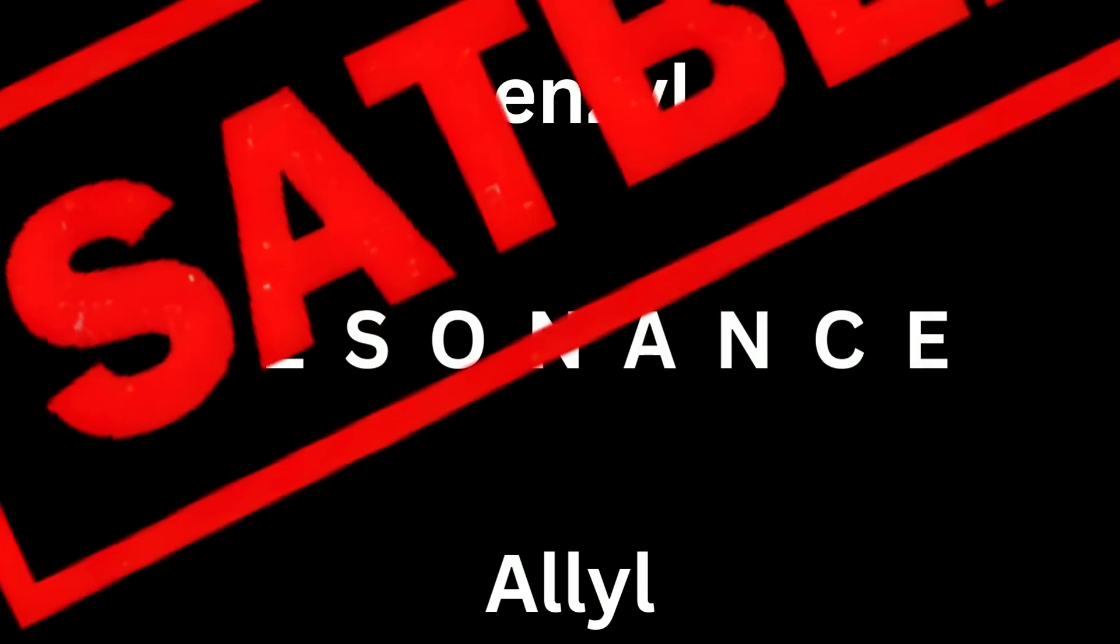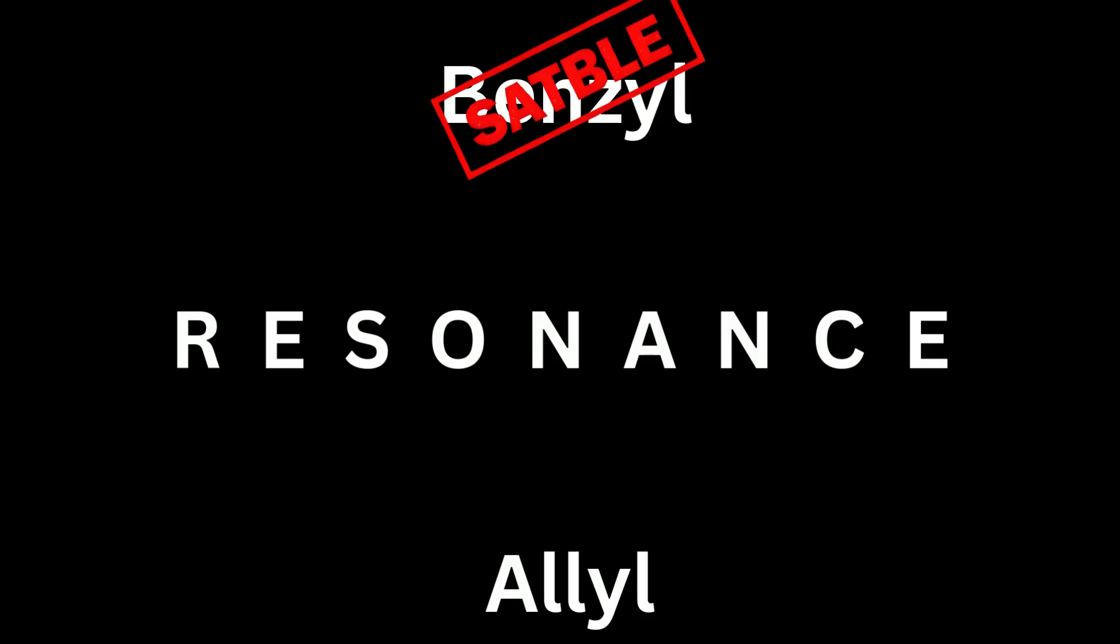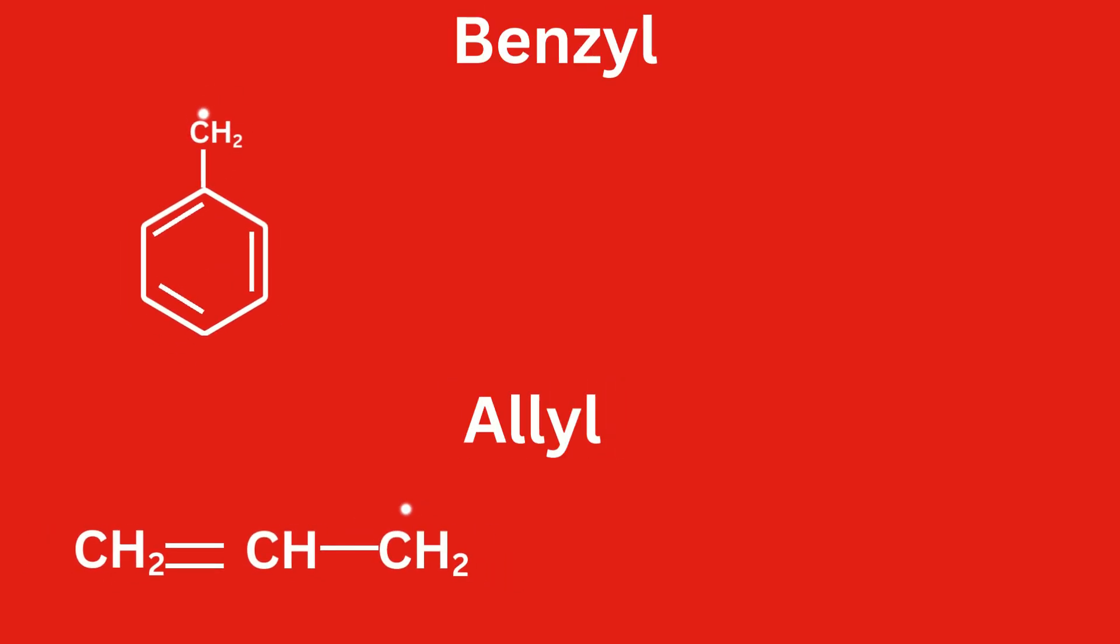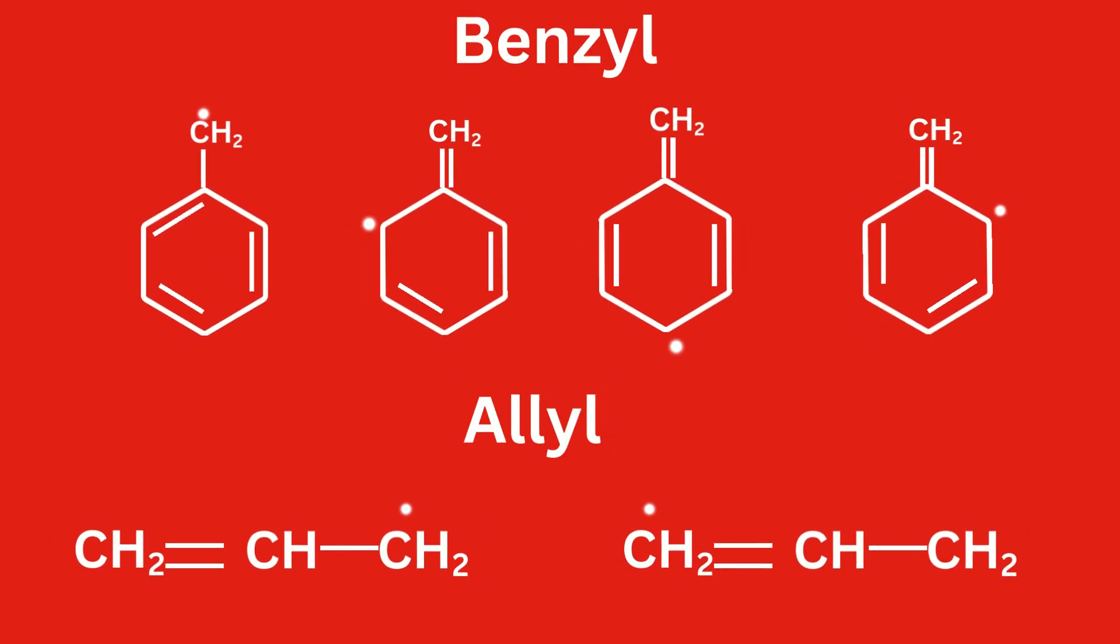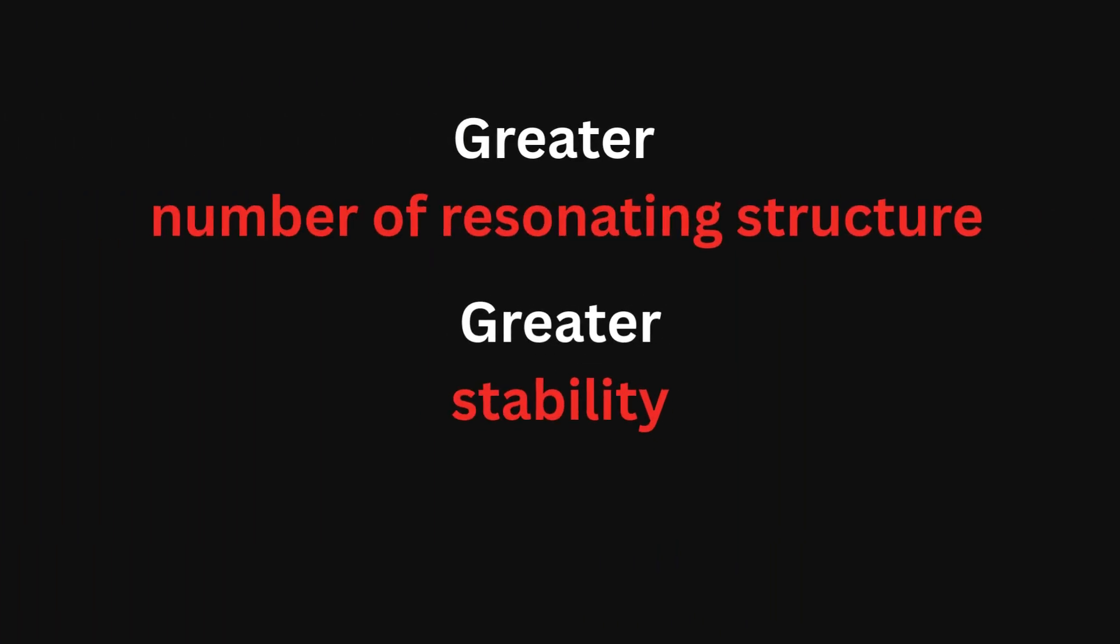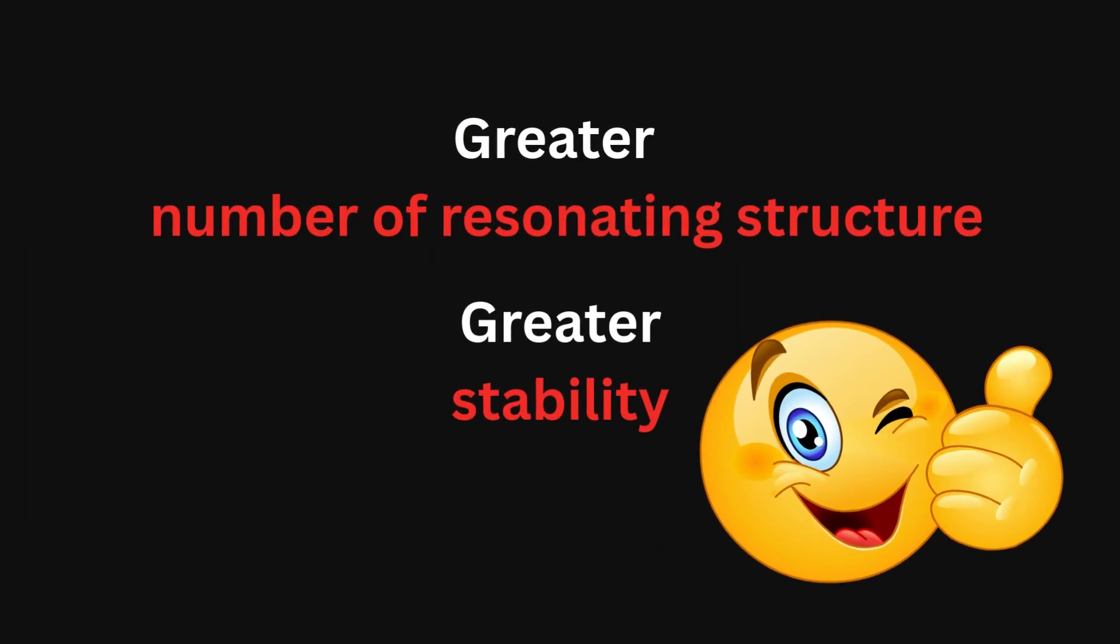Benzyl and allyl free radicals both are stabilized by resonance but benzyl is more stable than allyl. Why? Because benzyl forms more number of resonating structures and greater the number of resonating structures, greater is the stability of the molecule.